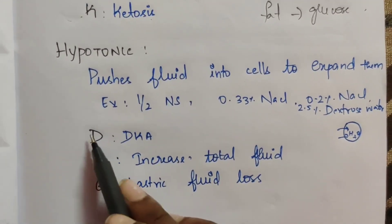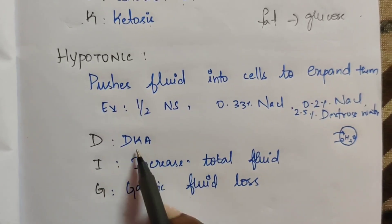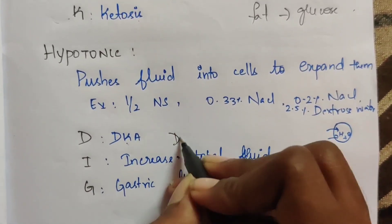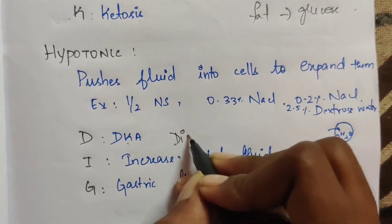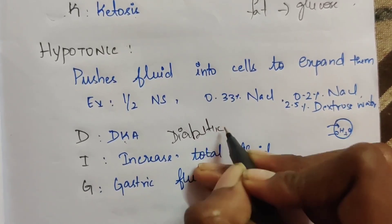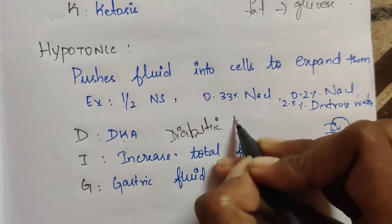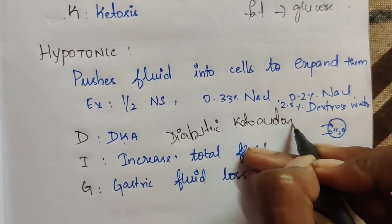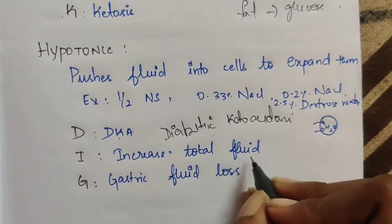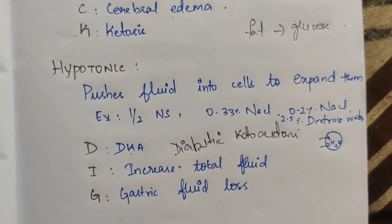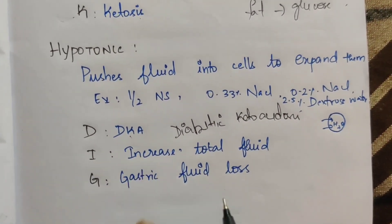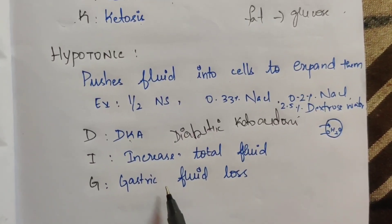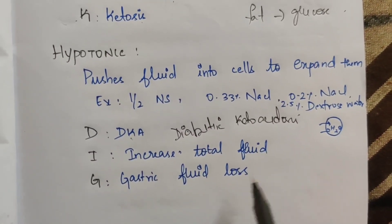The indications for hypotonic solution use the acronym DKA — diabetic ketoacidosis — as well as conditions involving increased total fluid volume and gastric fluid loss.